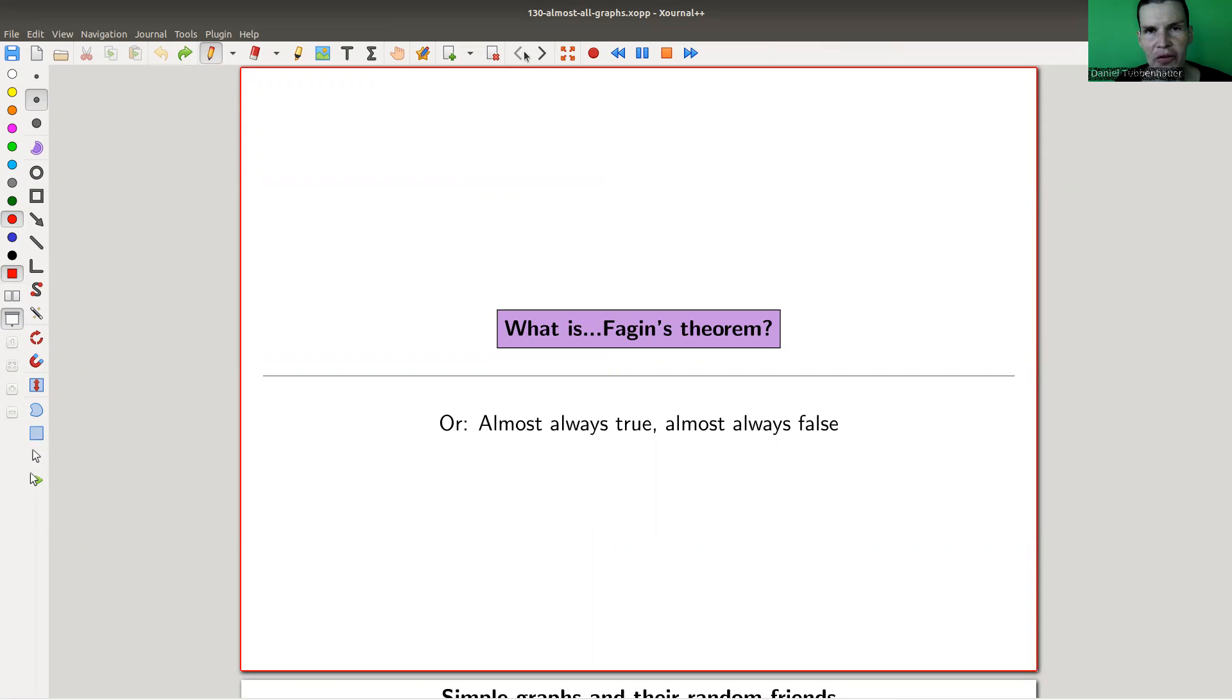Welcome everyone to my continuation of my favorite theorems, my very biased collection as usual. Today I would like to talk about a theorem known as Fagin's theorem. There's a wonderful book on this topic by Bollobás, Random Graph Theory, linked in the description. Bollobás says it's due to Fagin.